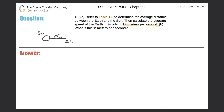Now we need to calculate the average speed of the Earth in its orbit in kilometers per second. We need to conceptualize how the Earth travels around the Sun. It travels in an orbit — a circular orbit. Well, it's not totally circular, but let's assume it's a perfect circle for this problem. So I'm going to draw its orbit now. What a beautiful circle.